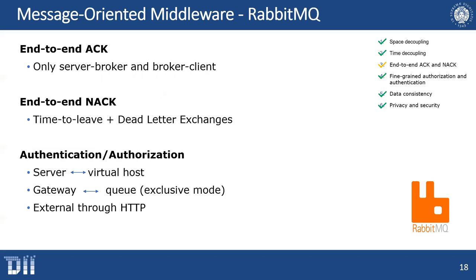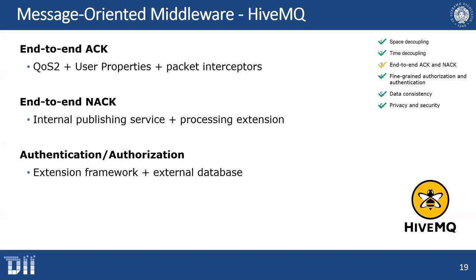Starting from RabbitMQ, it does not provide end-to-end acknowledgement, but only server-broker and broker-client message exchange acknowledgement. In order to have it end-to-end, a non-negligible modification of the broker code is required. Instead, by configuring proper time-to-live and binding each server to a dedicated dead letter exchange, it is possible to notify the server of a failed delivery. Finally, assigning to each server a virtual host and to its assigned gateways a queue in exclusive mode inside that virtual host, it is possible to enforce strict control over message addressing. In addition, RabbitMQ provides a plugin to implement authentication externally through HTTP.